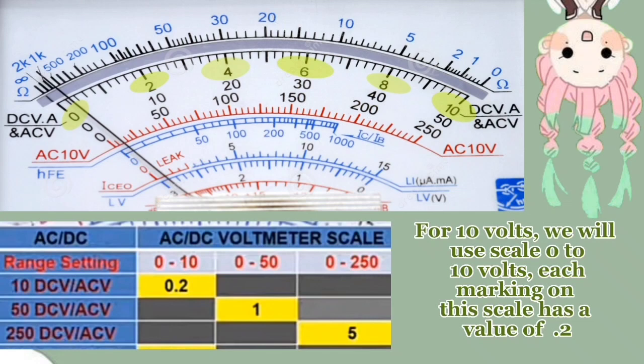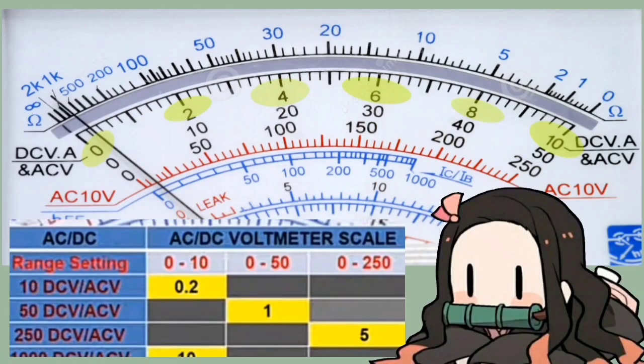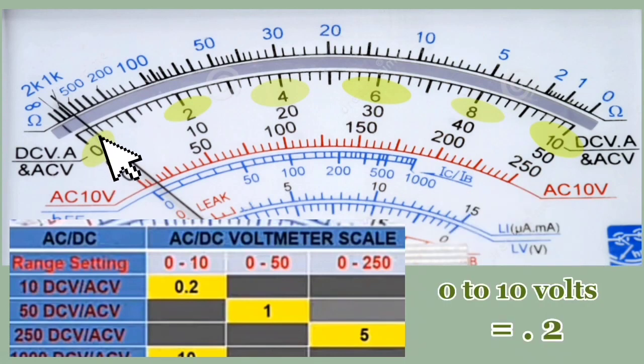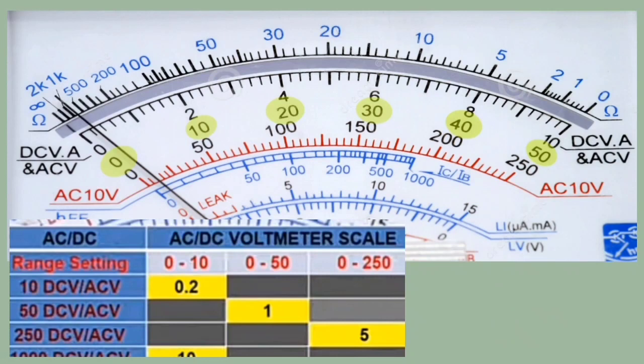Each marking on the scale has a value of 0.2. This is how we will read it. Let's start with here: 0.2, 0.4, 0.6, 0.8, 1, 1.2, 1.4, 1.6, 1.8, and 2, and that will be directed.